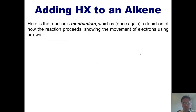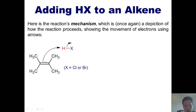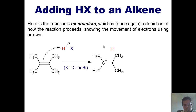Here's the reaction's mechanism — a depiction of how the reaction proceeds, showing electron movement using arrows. The pi electrons shared between the doubly bonded carbons flip out like a door on a hinge and form a bond with the hydrogen. As these electrons come in and grab the hydrogen, it breaks that bond and thrusts the two electrons up onto the chlorine or bromine.